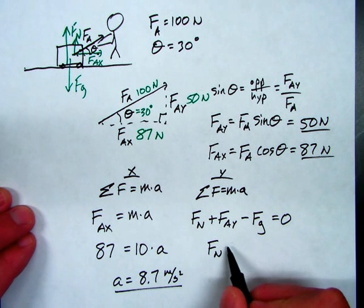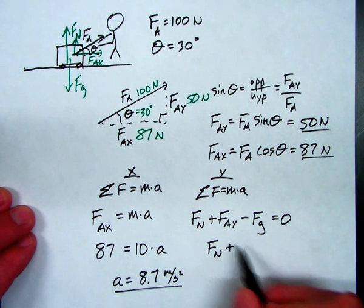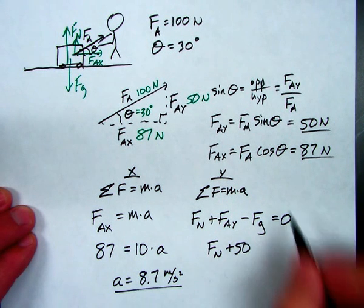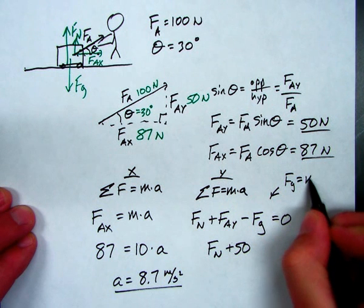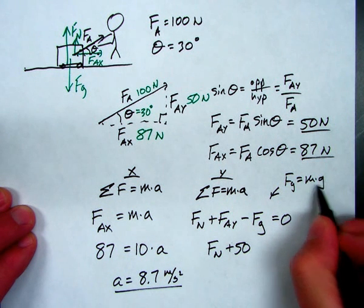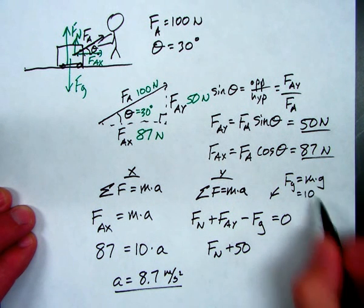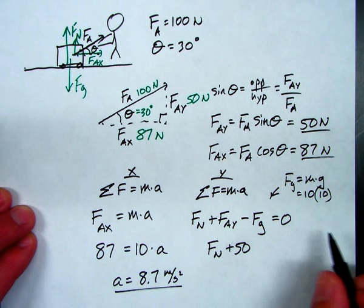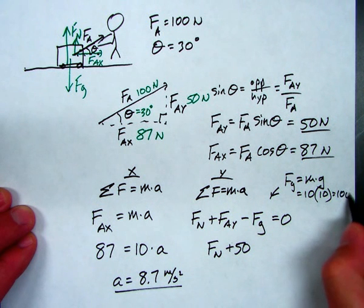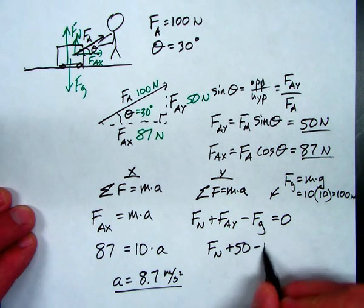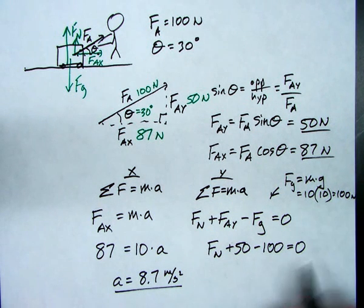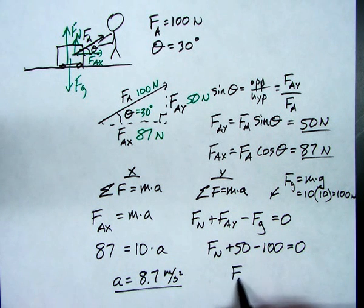Normal force is unknown. We know FAY is 50. Force of gravity. What is the force of gravity? Well, remember, force of gravity depends on mass and G. So, if the mass is 10, I'm going to round G even though it's 9.8. I'm going to call it about 10. So, the force of gravity on this object is about 100 Newtons. So, minus 100 equals 0. I can see that the normal force has to be 50 Newtons.